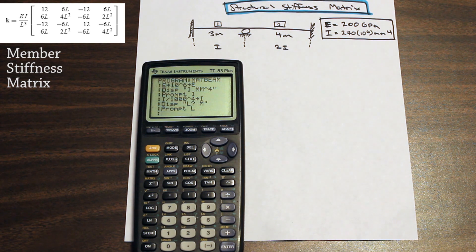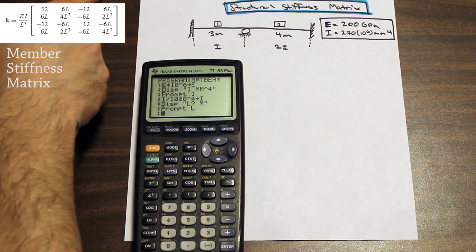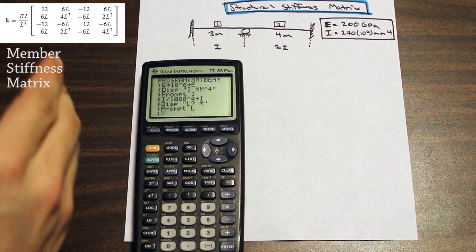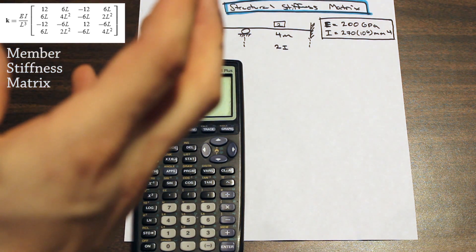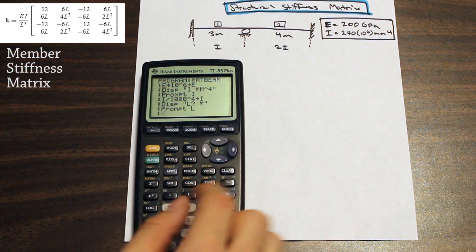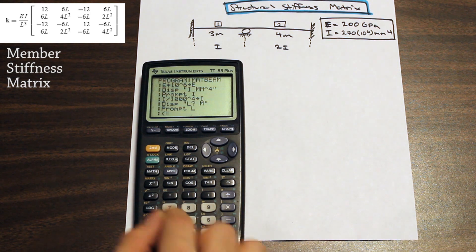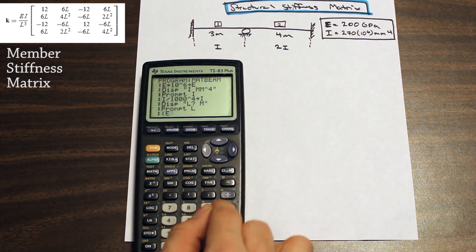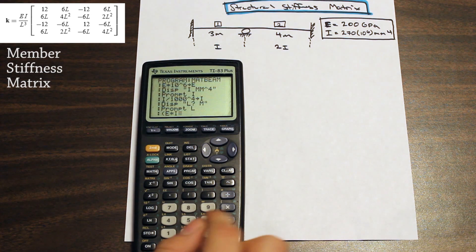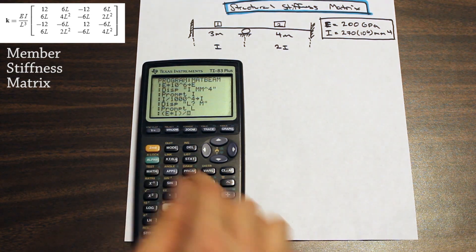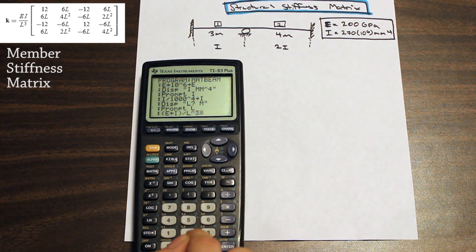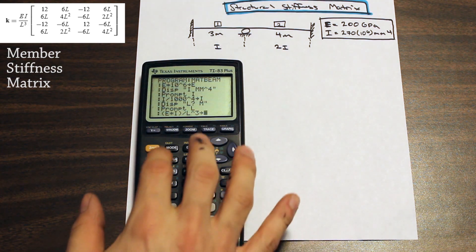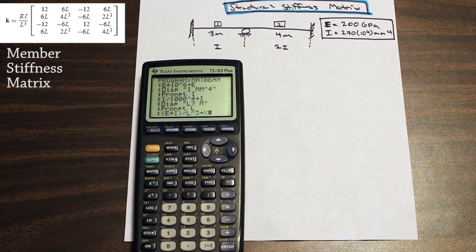Now we're ready to move on to the matrix part. Before that, we want to compute EI over L cubed — as shown in the top left formula — and store it in a single variable to make programming easier. So we type E times I divided by L to the power of 3, and store that in X. Now EI over L cubed equals X.